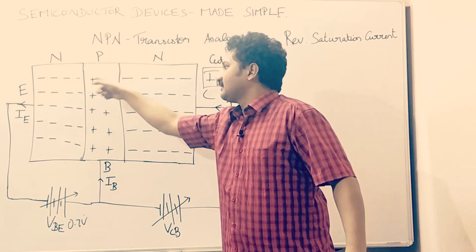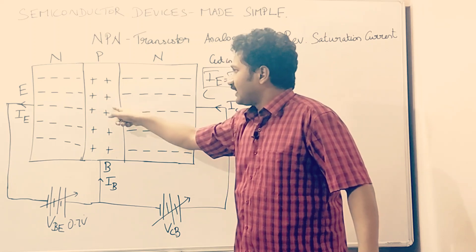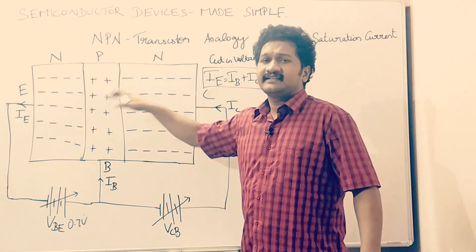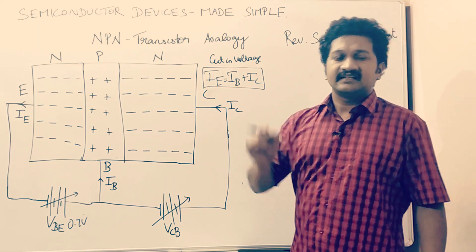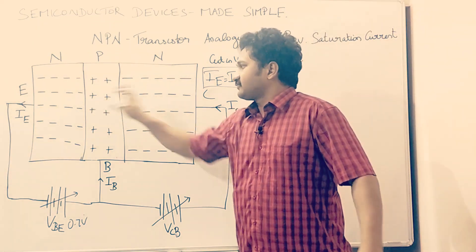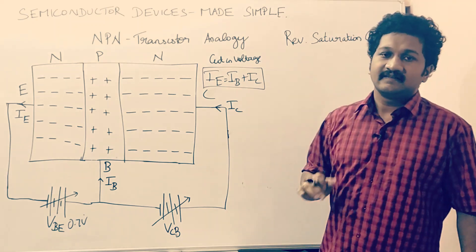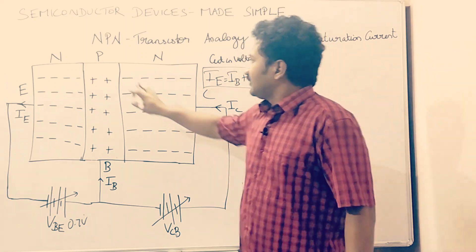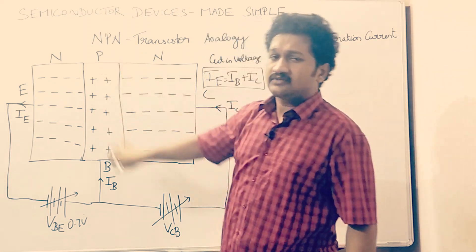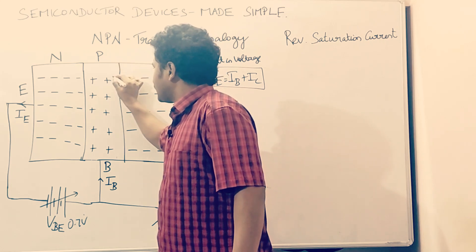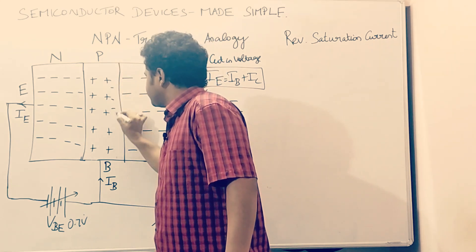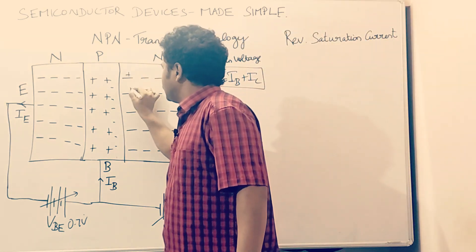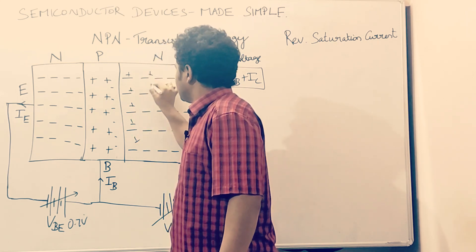It transfers from the collector region to the base region and from the base back to the collector region. These are the roles of the majority charge carriers. If there are majority charge carriers in a semiconductor or in the layers of a semiconductor, there will surely be minority charge carriers. Here, though this region is lightly doped with holes, it also has some minority charge carriers — electrons. And coming to the collector, it also has minority charge carriers — holes.